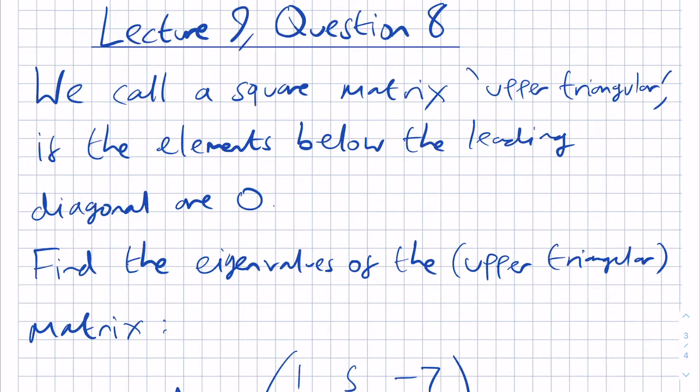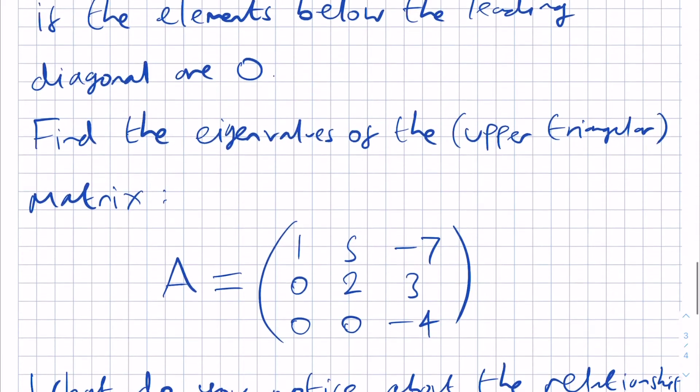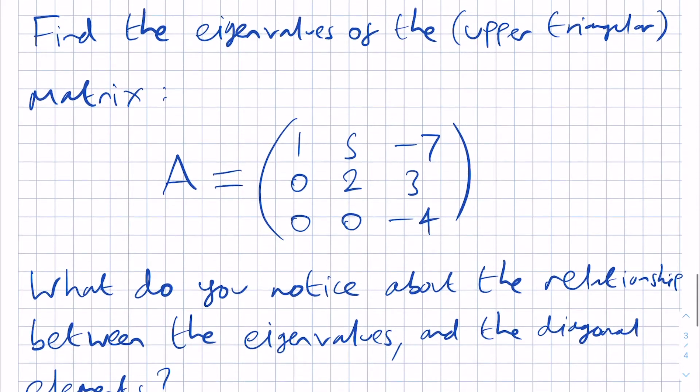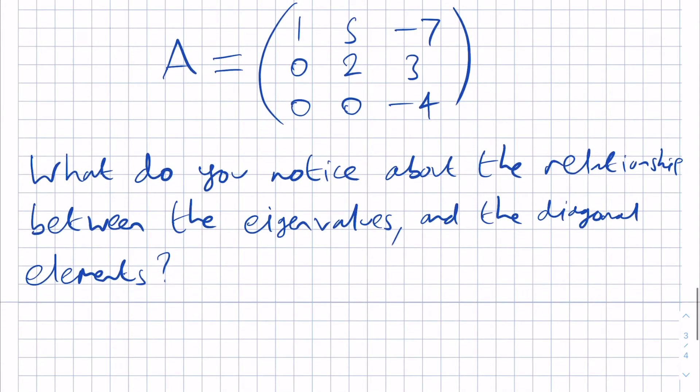The question says we call a square matrix upper triangular if the elements below the leading diagonal are 0. It asks us to find the eigenvalues of the upper triangular matrix A which is equal to 1, 5, minus 7, 0, 2, 3, 0, 0, minus 4.